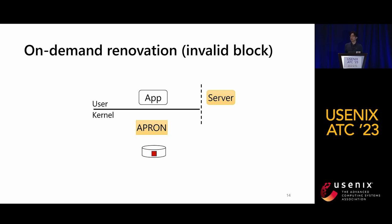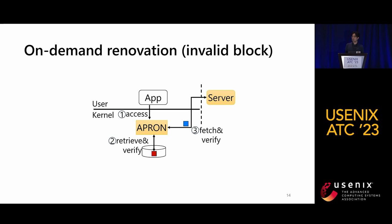This second figure explains how APRON recovers an invalid block. An application data block request is intercepted and verified by APRON, which recognizes that the requested block contains invalid content according to the hash tree. To fix this corruption, APRON interacts with a remote deployment server to download the requested data block, then verifies it again using the hash tree. After confirming the downloaded data is valid, APRON serves this data to the application and repairs the local block using it.